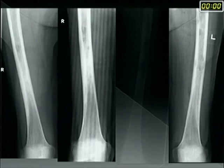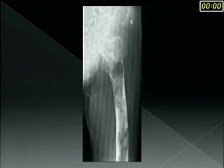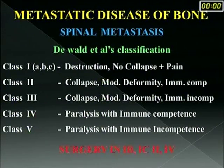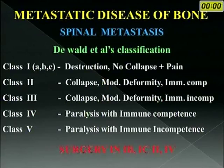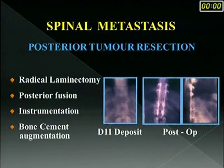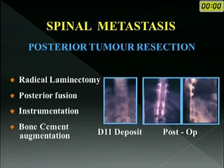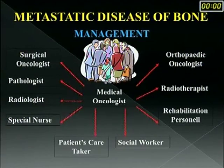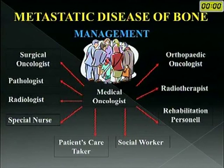Some patients may not be willing or fit for surgery and require only palliative treatment with good analgesics for pain relief. For spinal metastasis, a specific classification is used where surgery is indicated only in categories 1b, 1c, 2 and 4. Patients who are immunologically incompetent often may not withstand surgery. Standard instrumentation and bone cement augmentation help provide excellent pain relief. This is a team management approach — the orthopedic oncologist is only one part. A radiotherapist, social worker and patient caretaker are all needed for complete care of the patient.